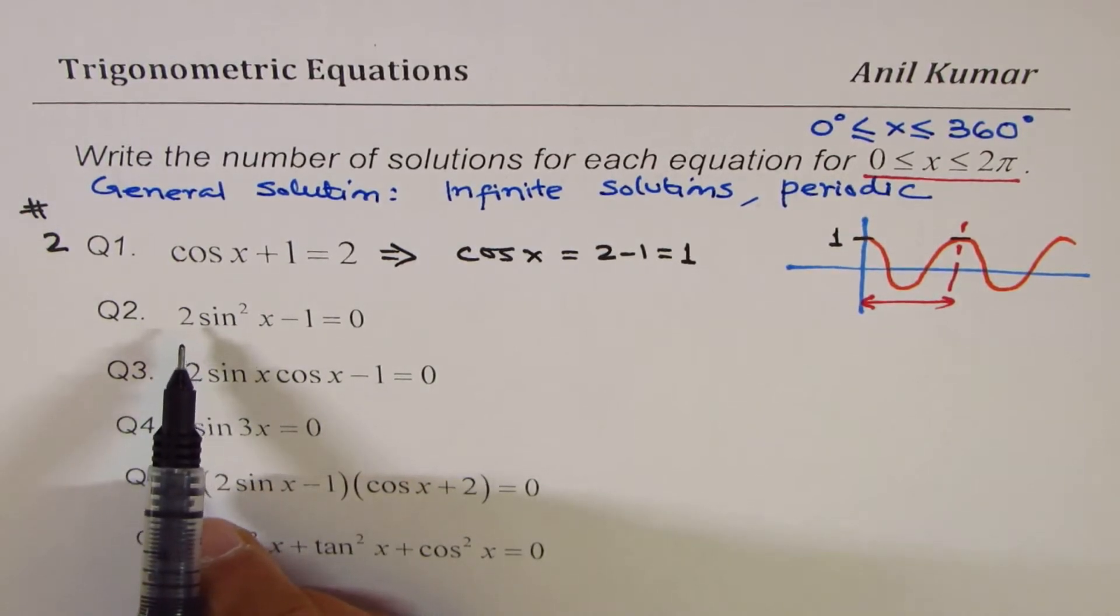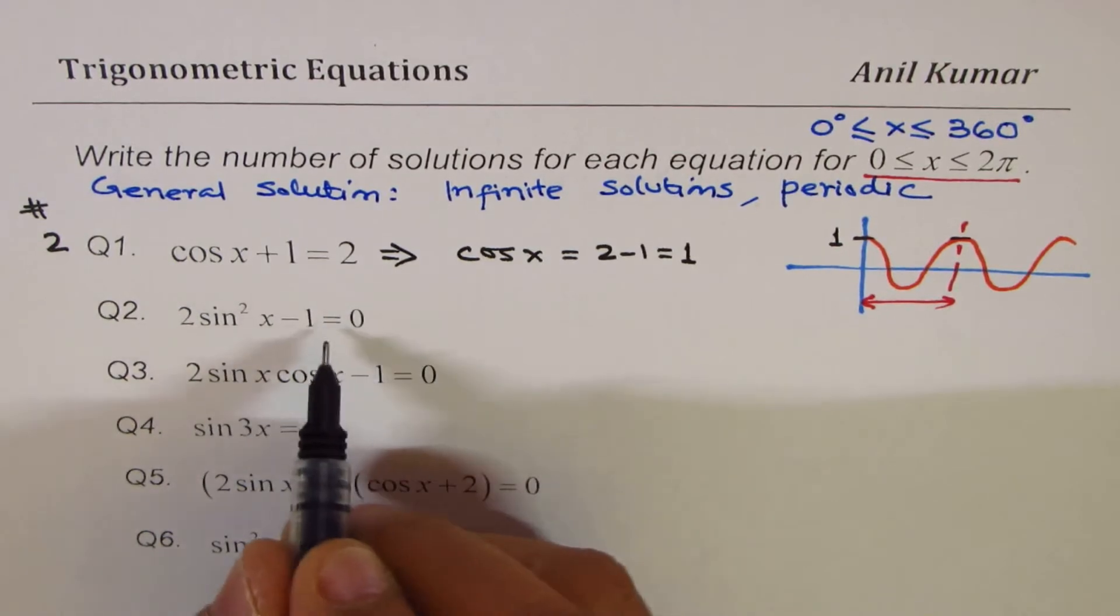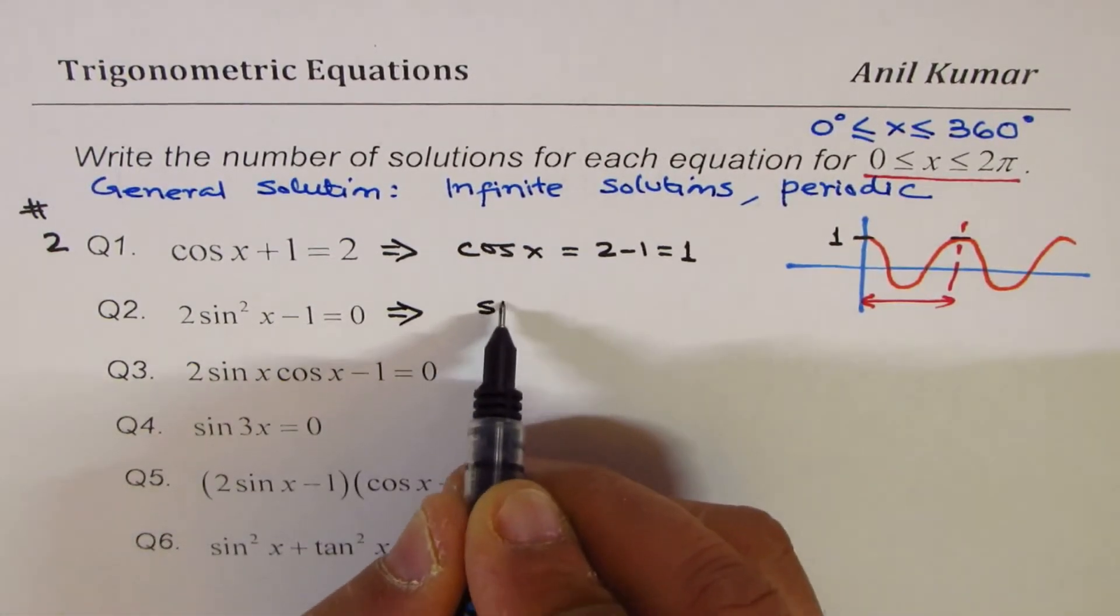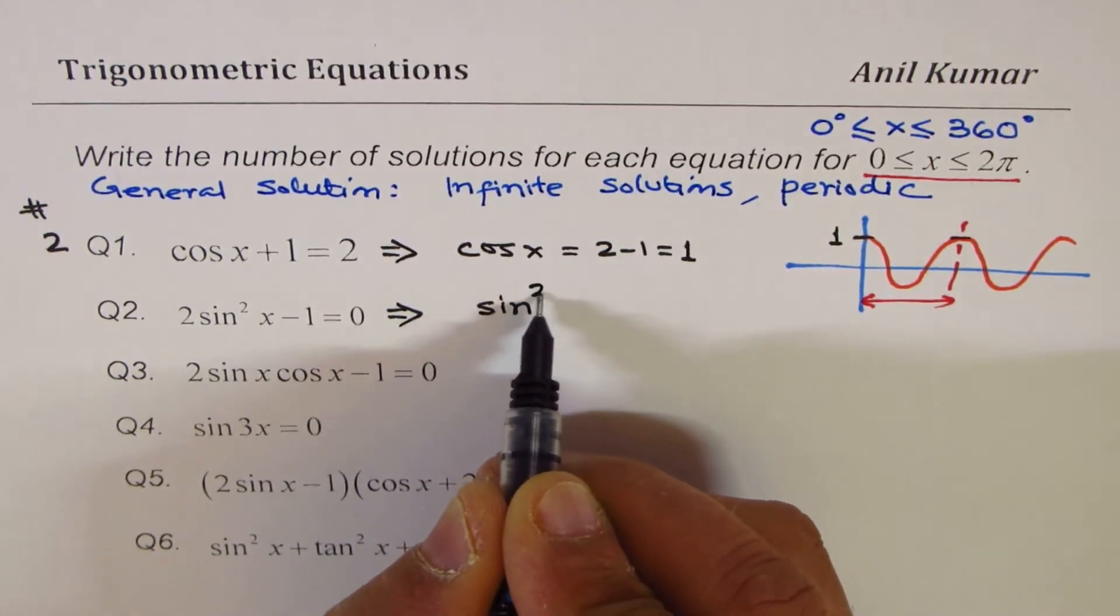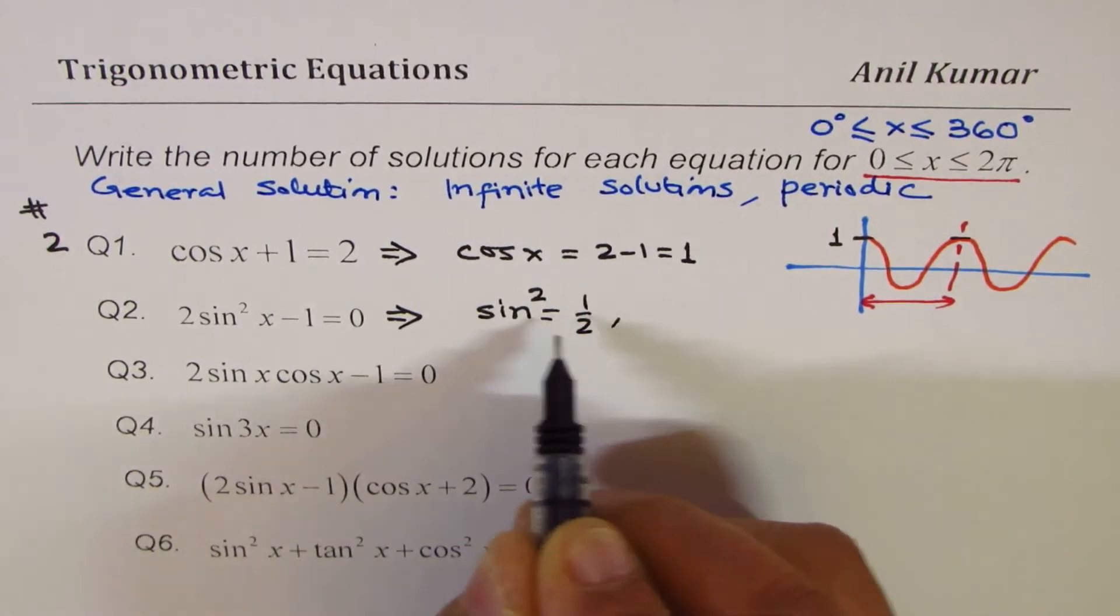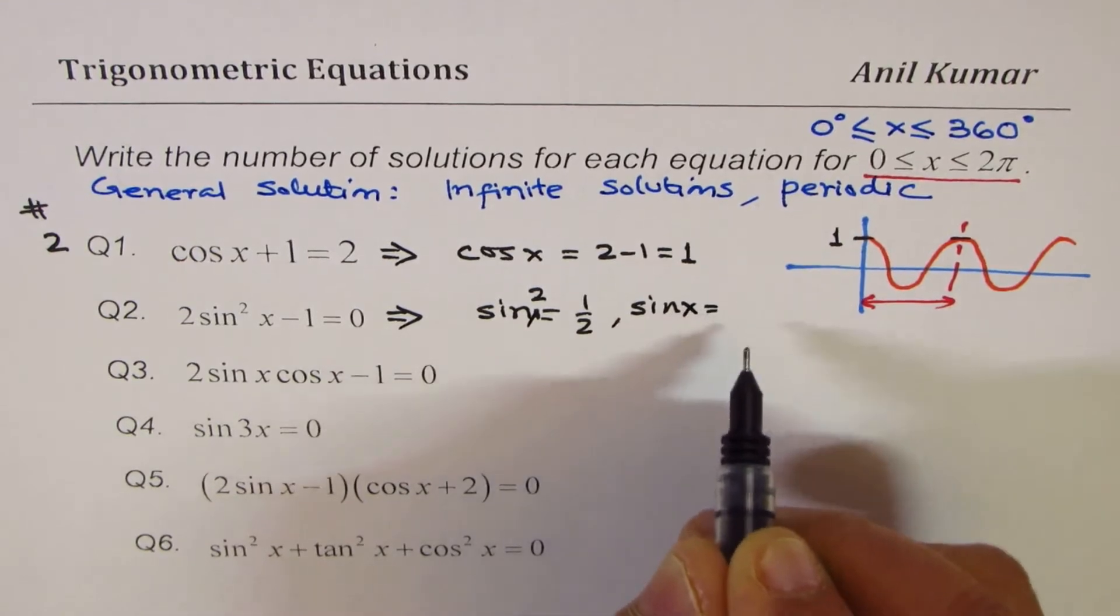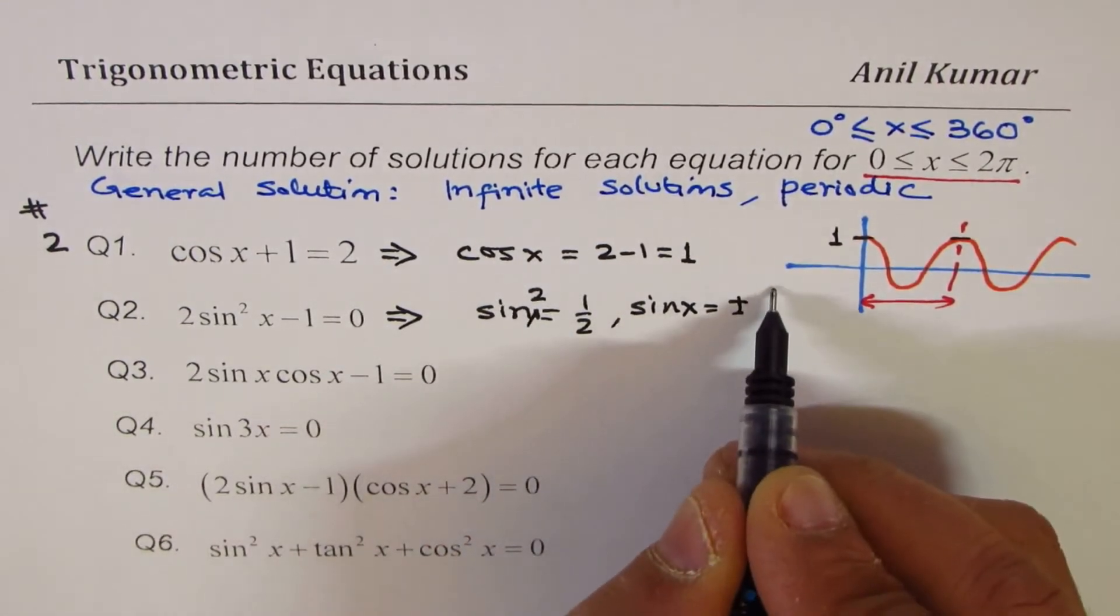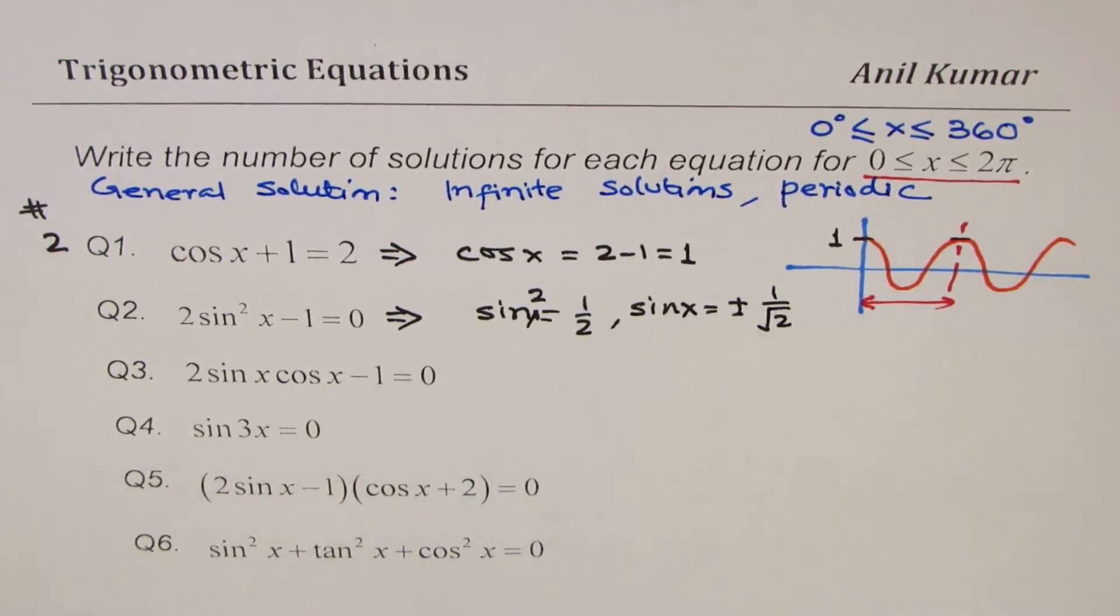The next question here is 2sin²x - 1 = 0. If you rearrange this equation, then what do you get? You get sin²x = 1/2, or we have sin x = ±√(1/2). Whenever you do square root, you are looking for plus minus 1 over square root of 2.